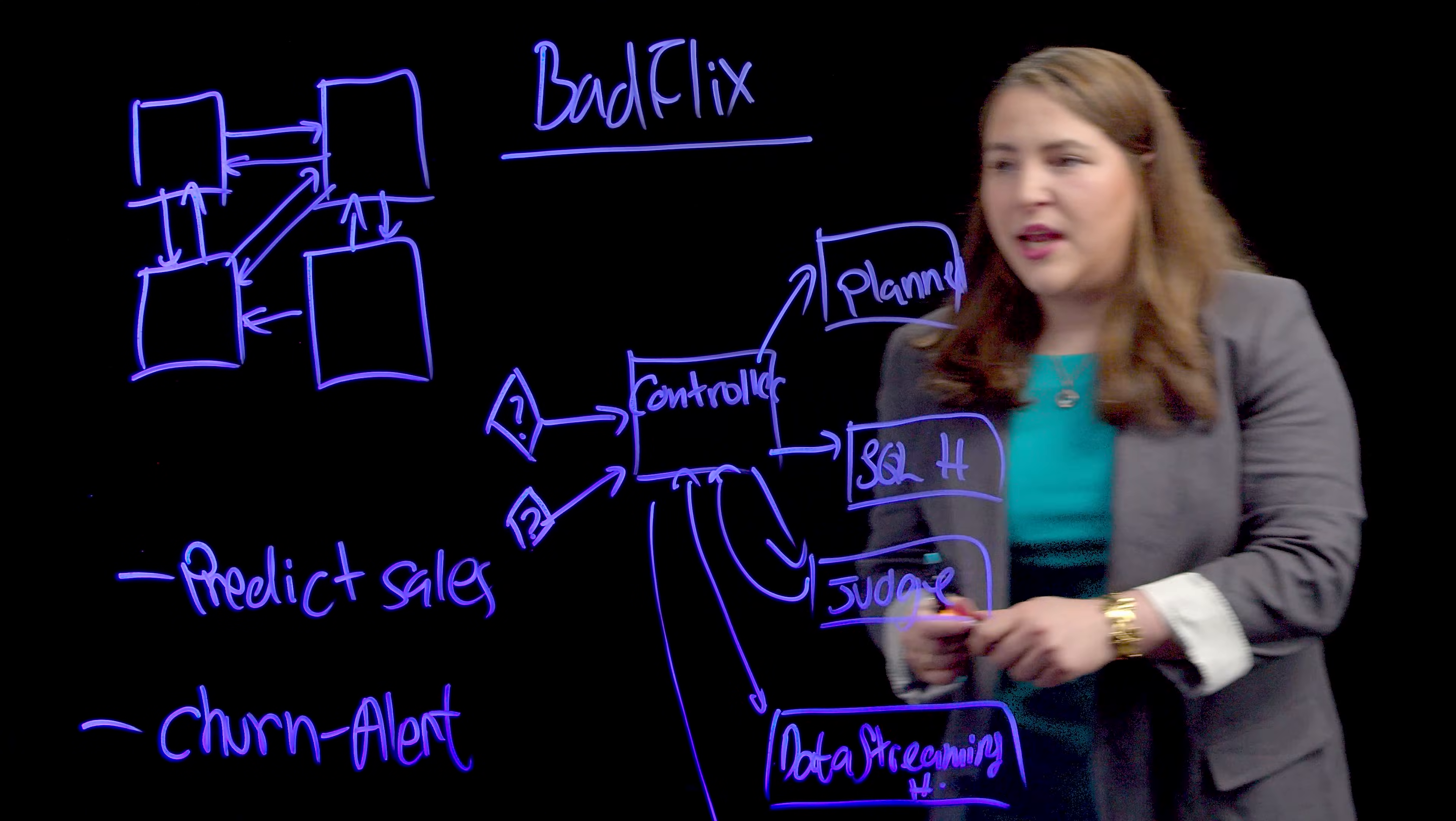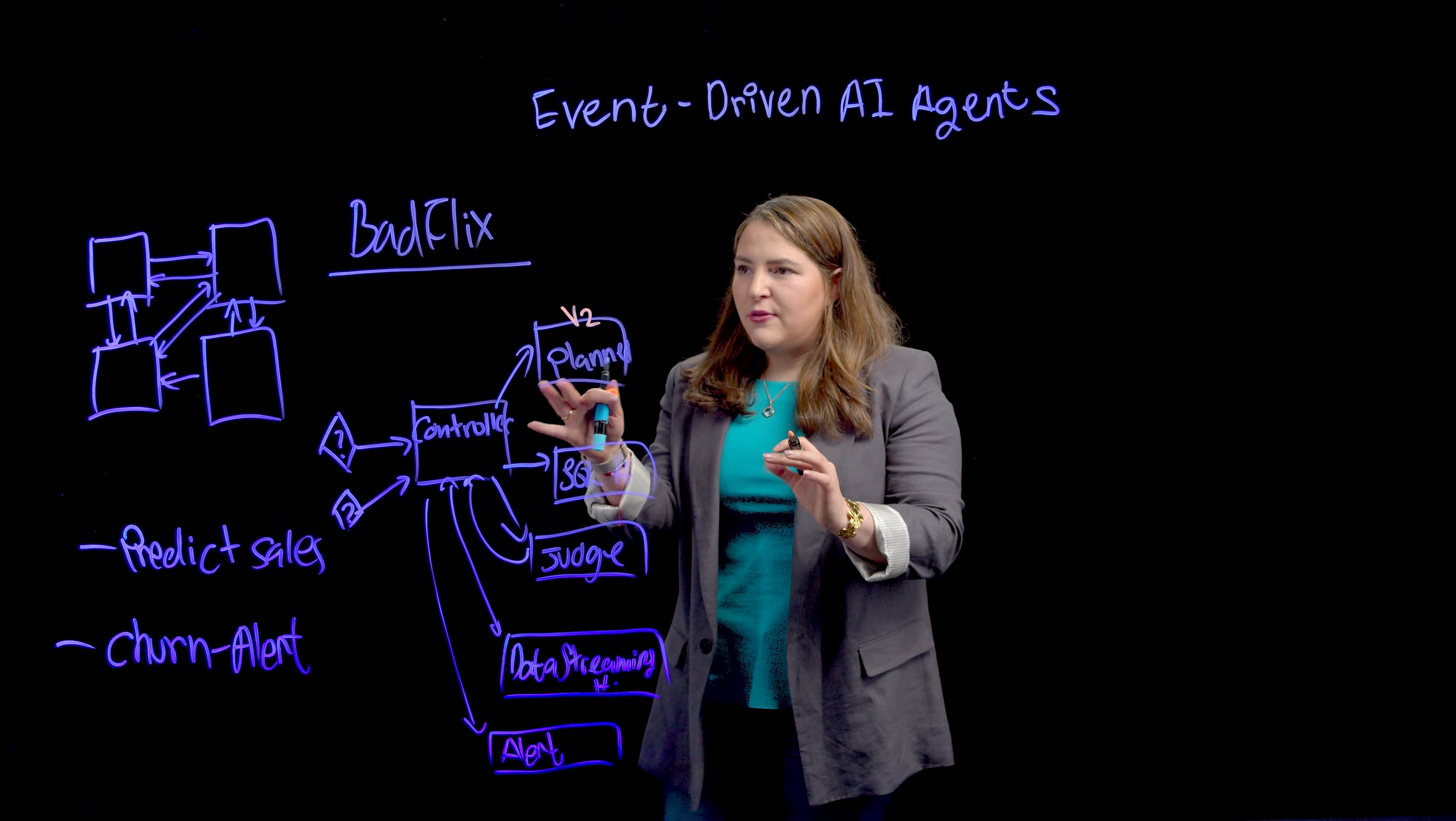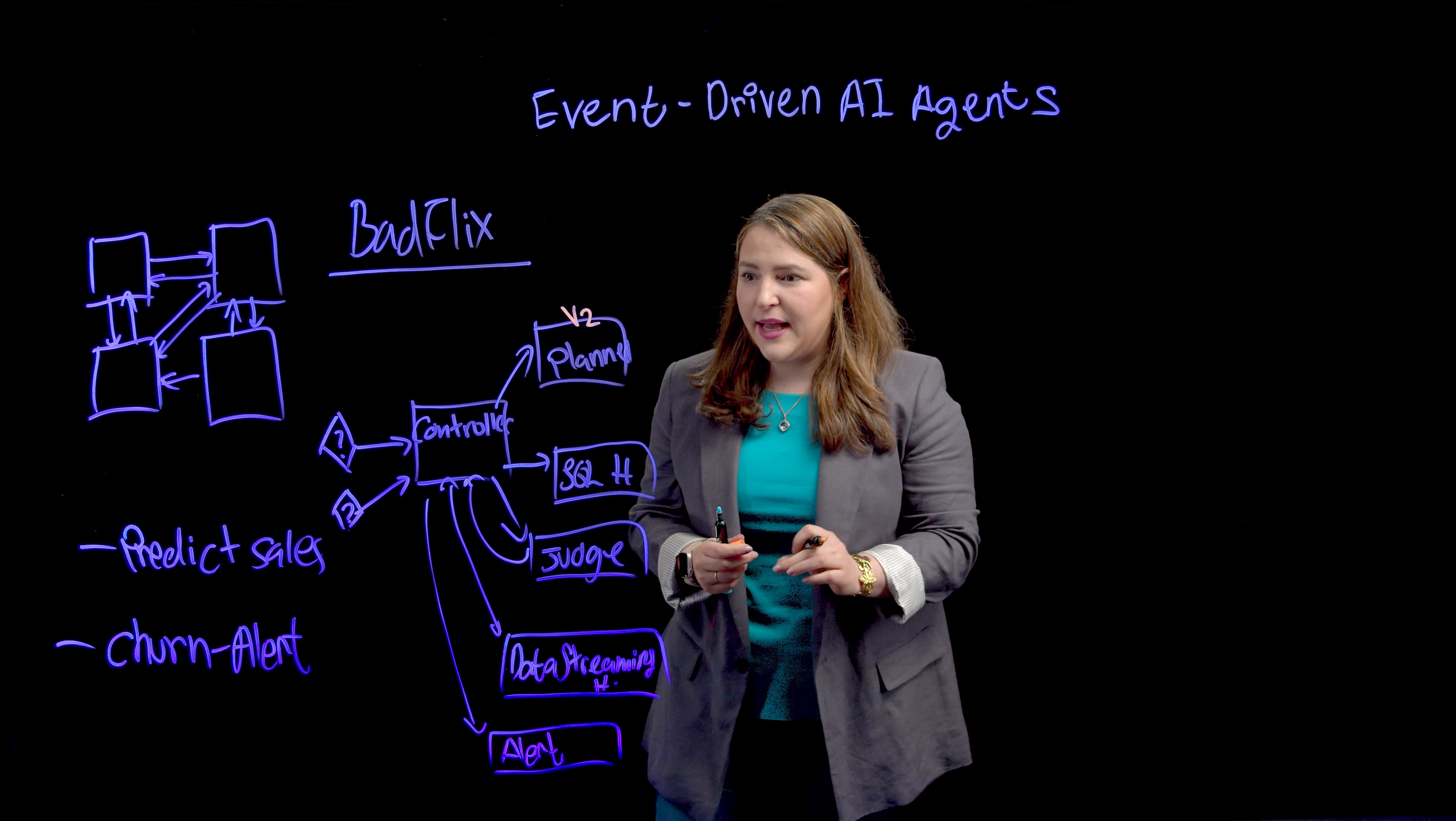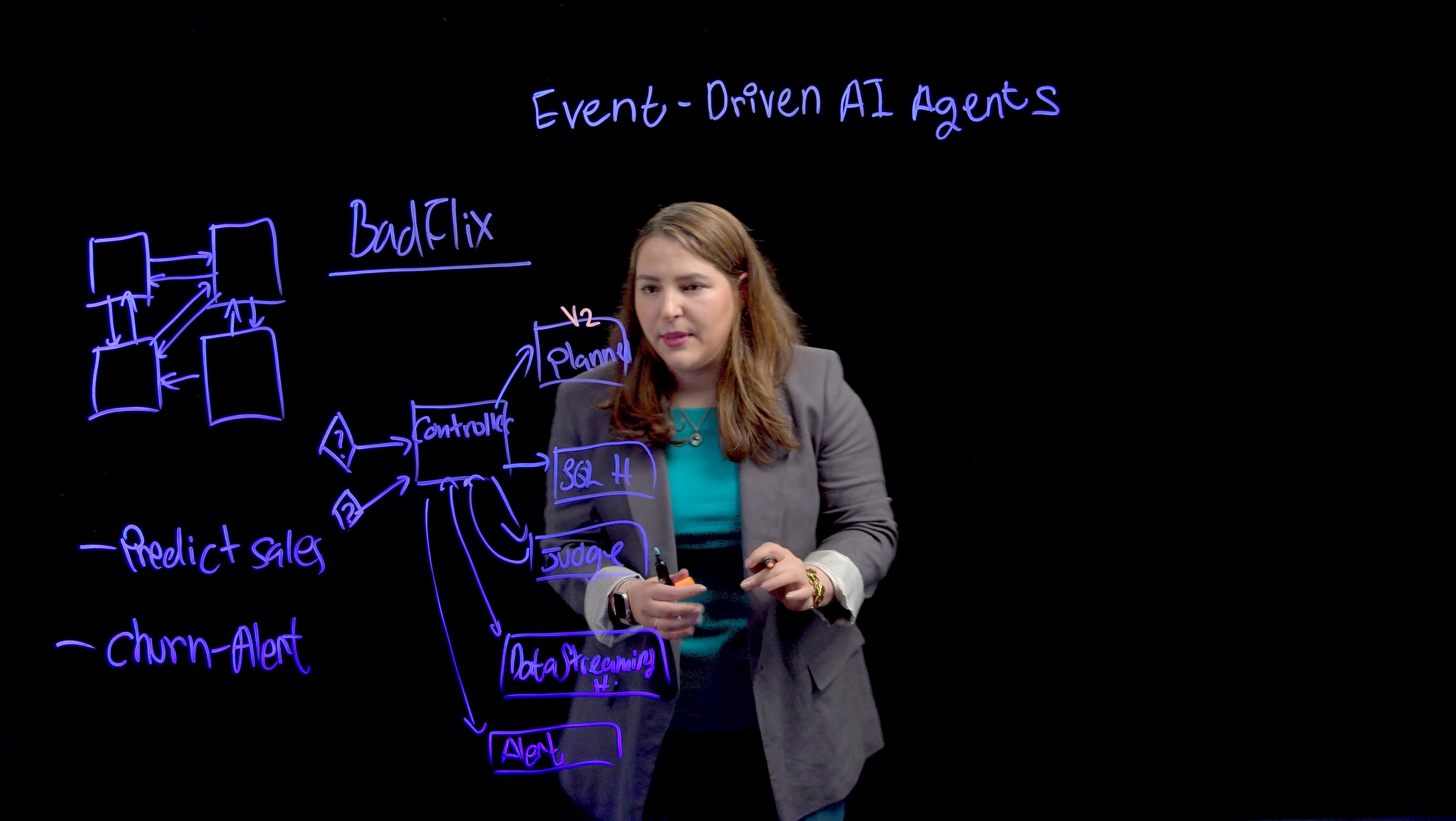This system overall is going to work. But what happens now when I need to change the planner? For example, I want to have a v2 of this planner. And if you think about it for a second, what we built here is a monolith. And monoliths are not bad, they can work. Each one of them can be a function or a class. But now that I want to upgrade my planner, that means I'm going to need to deploy all of them together. So now I have dependencies on deployment timeline.